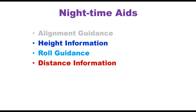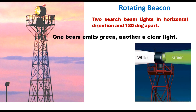This distance information is conveyed through the approach light system. The color and pattern in which an airport is lighted are standardized for all airports. The first signal given to the pilot is through a rotating beacon. Two surge beam lights in horizontal direction are 180 degrees apart — one beam emits green light and another emits a clear (white) light. This indicates that the runway is equipped with ILS facilities for nighttime landing.